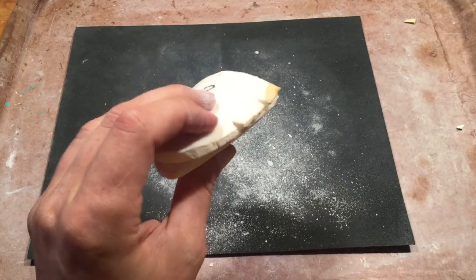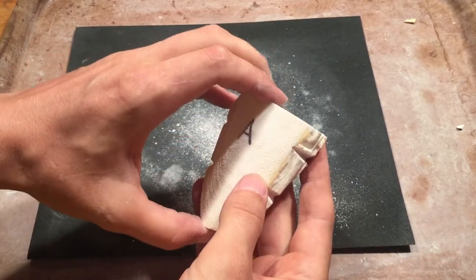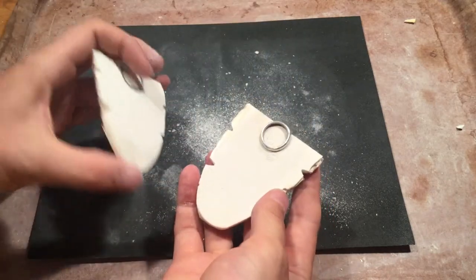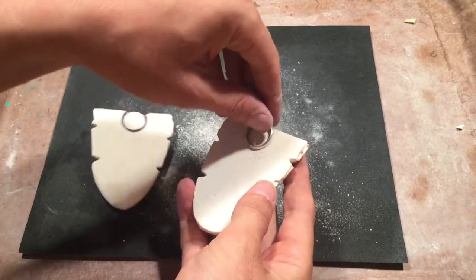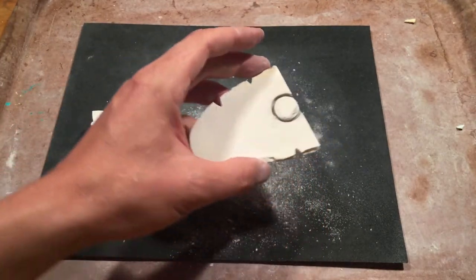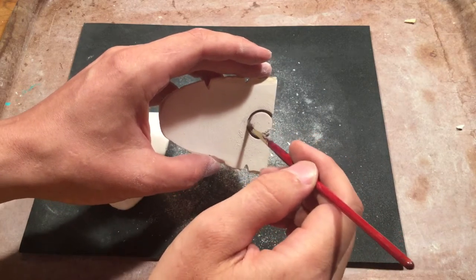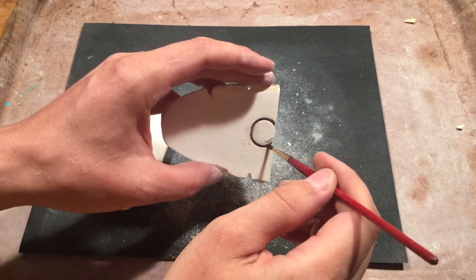Once you have your registration marks in, you can get away with taking the whole thing apart knowing that you're still going to have the alignment you need and you can remove your master part ever so gently and then take your brush and bring out that cuttlefish texture that you're going to want to keep.